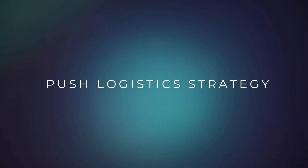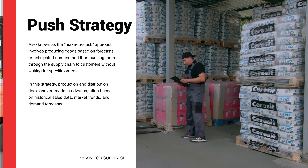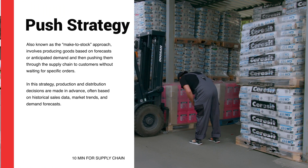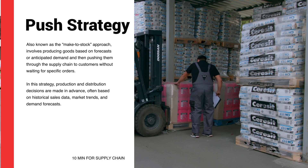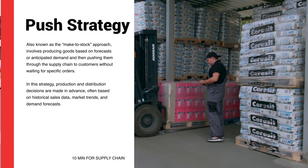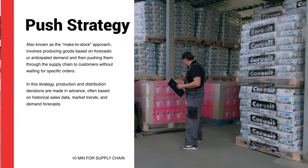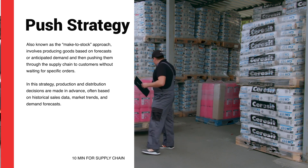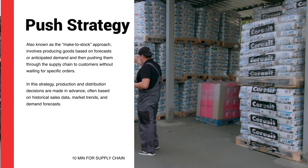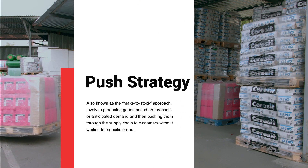Push logistic strategy, also known as the make-to-stock approach, involves producing goods based on forecasts or anticipated demand and then pushing them through the supply chain to customers without waiting for specific orders. Production and distribution decisions are made in advance, often based on historical sales data, market trends, and demand forecasts.